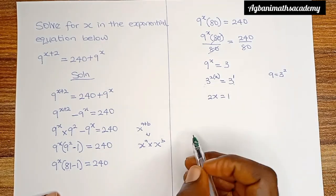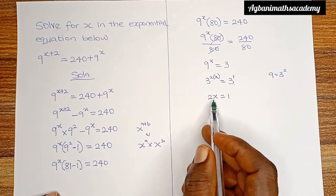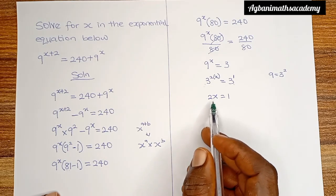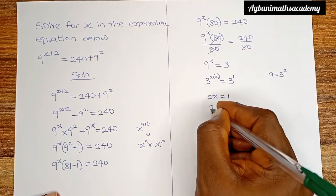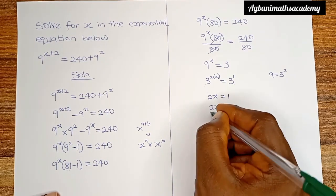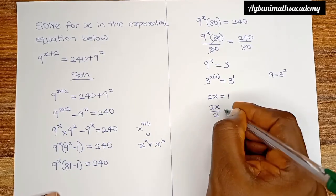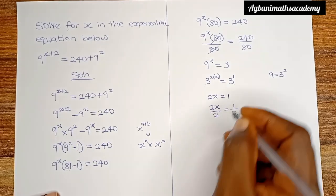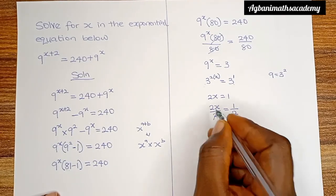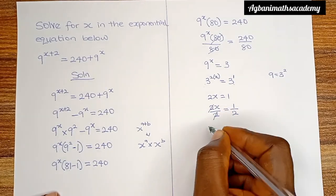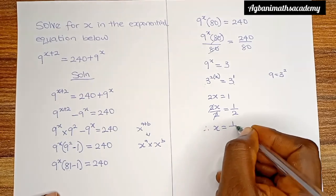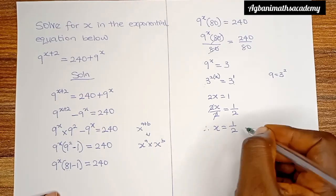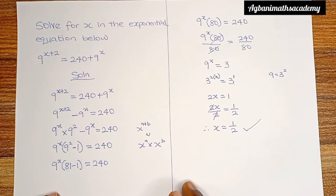In order to get the value of x, we divide both sides by 2. So 2x over 2 is equal to 1 over 2. The 2s cancel out, therefore x is equal to 1 over 2. This is the answer to this question.